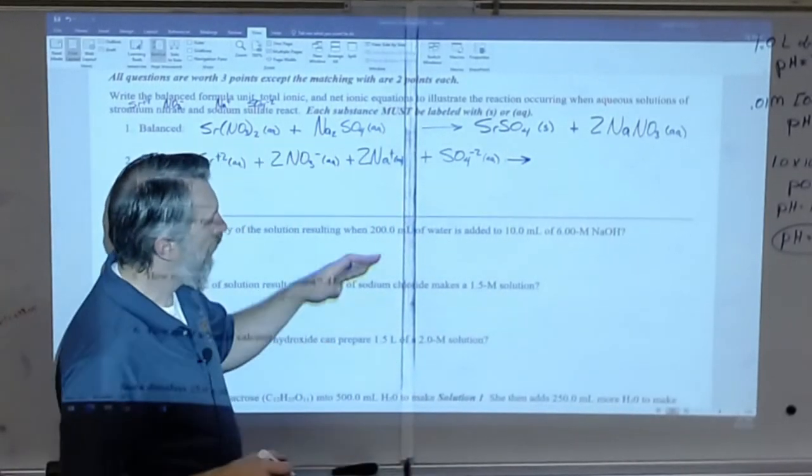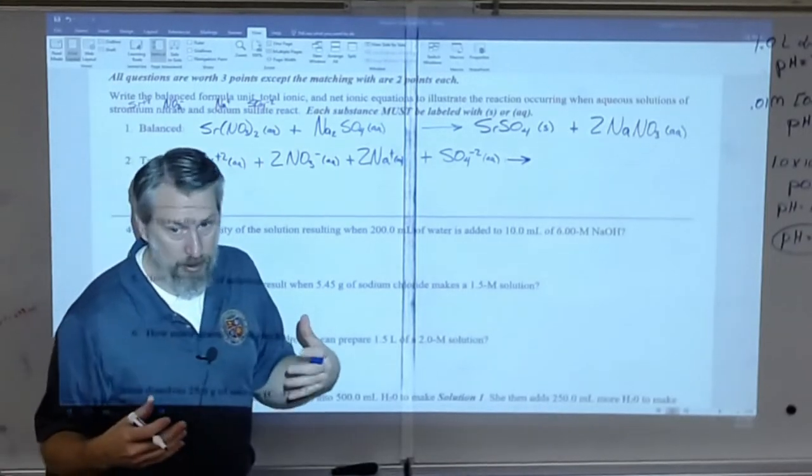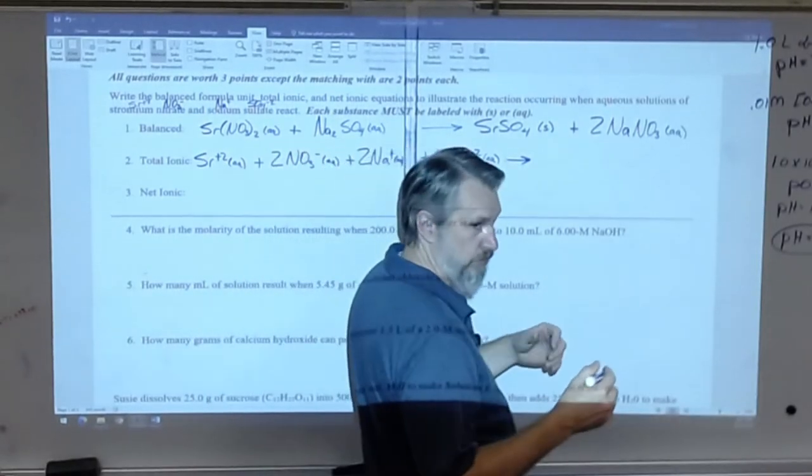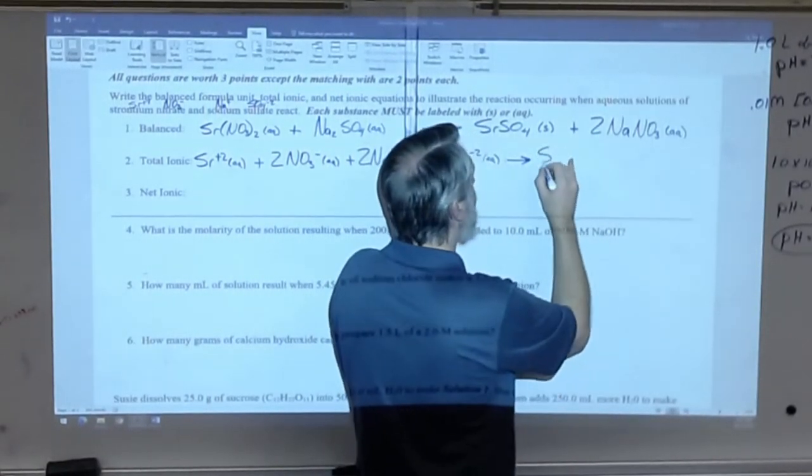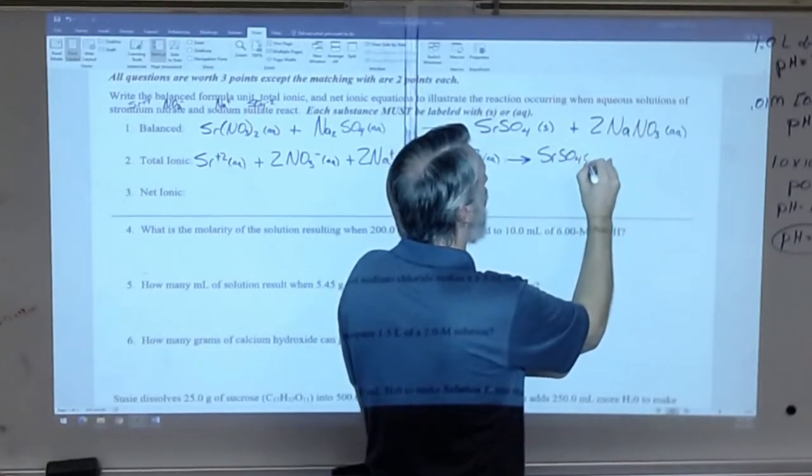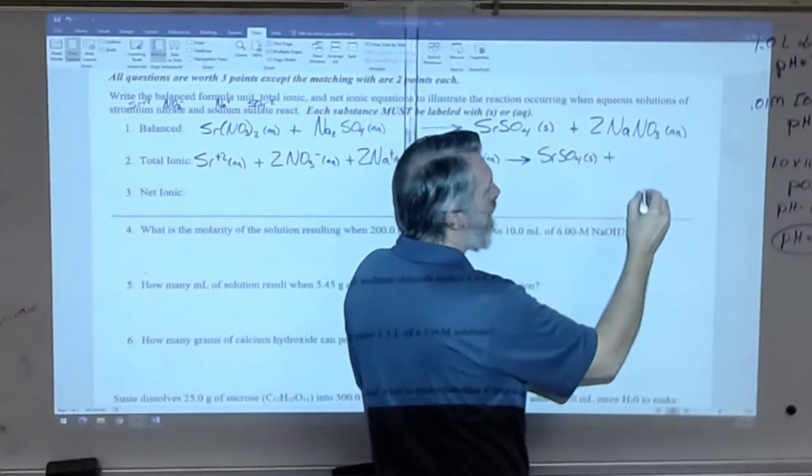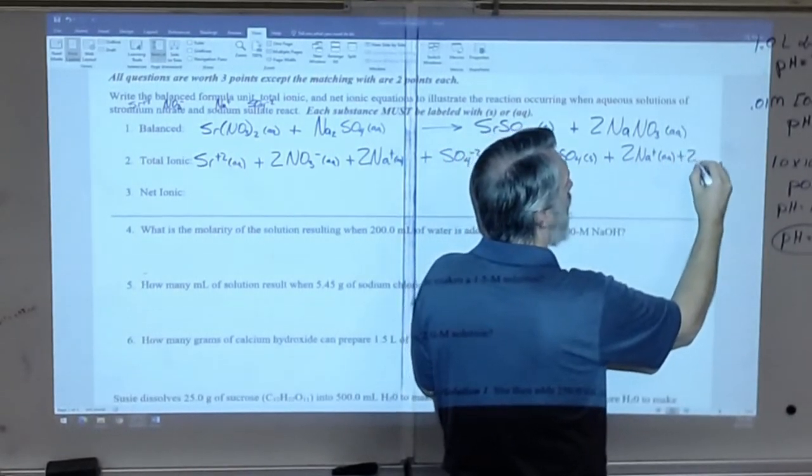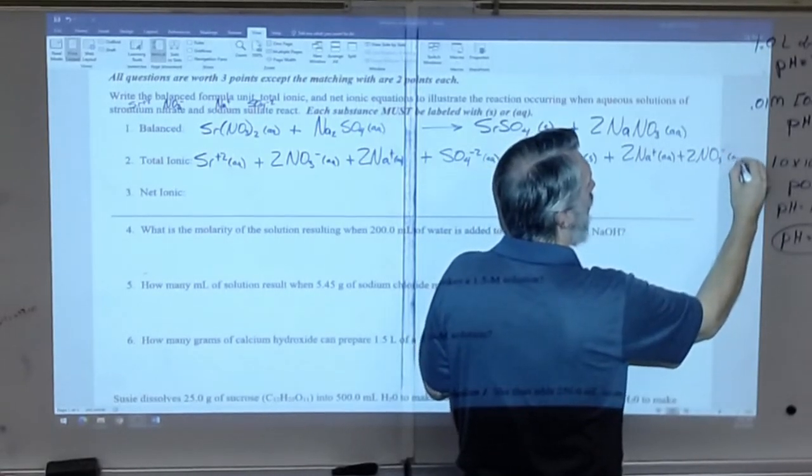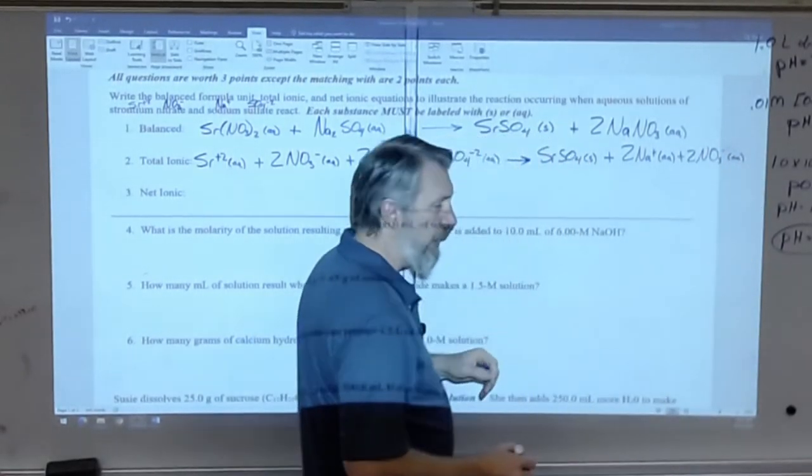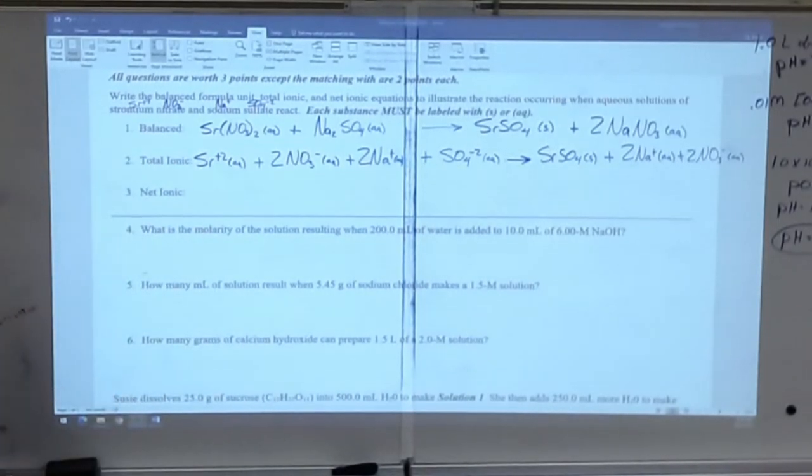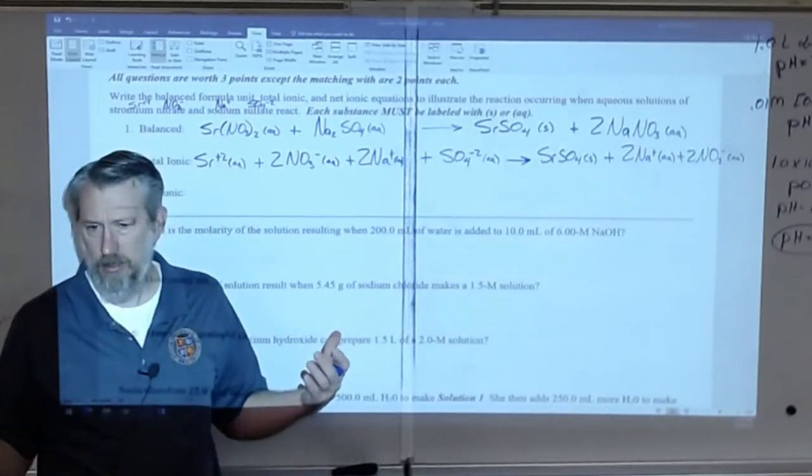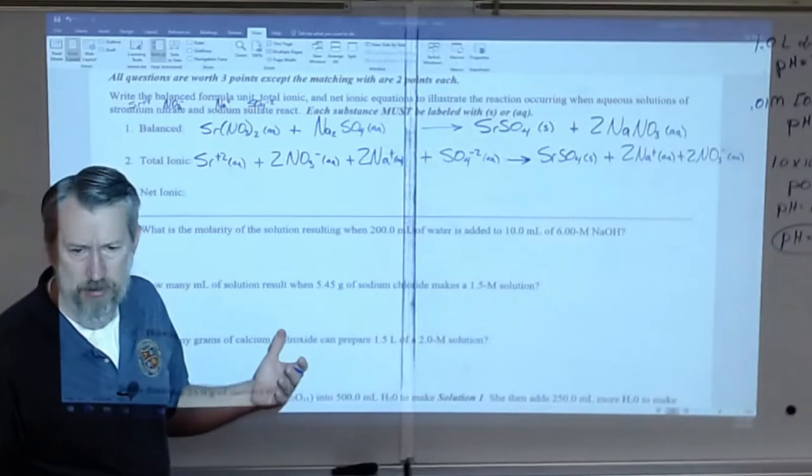This is going to be strontium plus two aqueous. Notice this is not NO3 with a subscript two, right? This is two nitrate ions. This is three different pieces stuck together. So I want you to put two NO3 minus aqueous. Same thing here. I've got two Na plus aqueous. Then I've got SO4 minus two. I need to see those charges because that's what you're doing here is you're representing what's actually happening in water when the water gets a hold and breaks things apart.